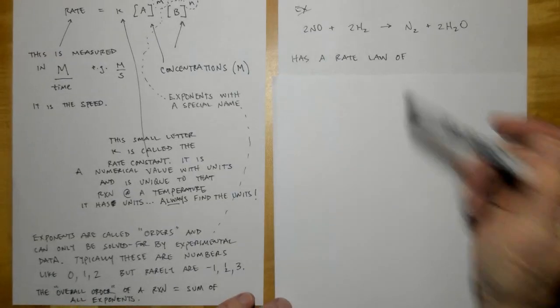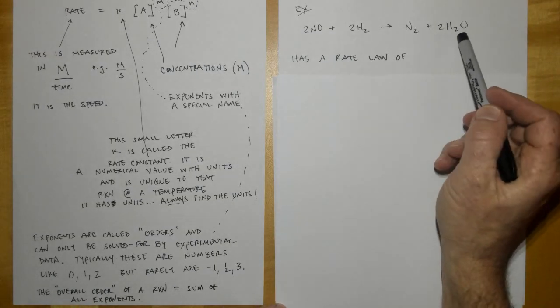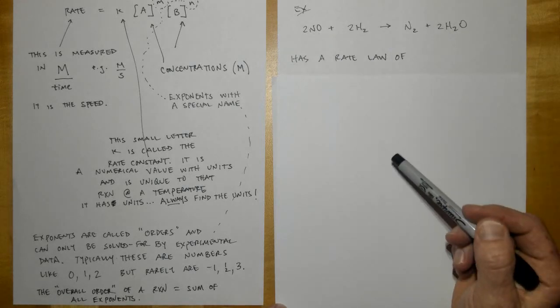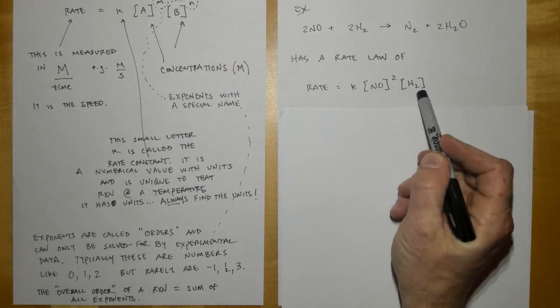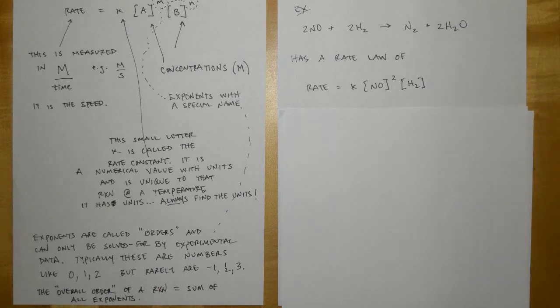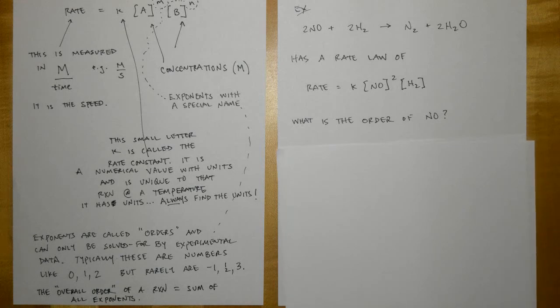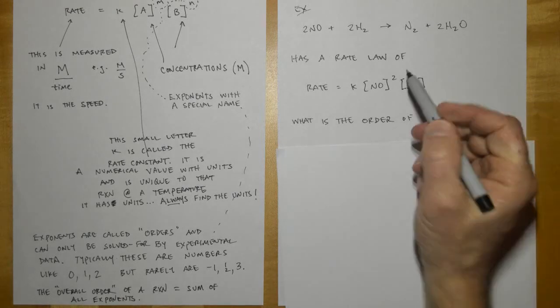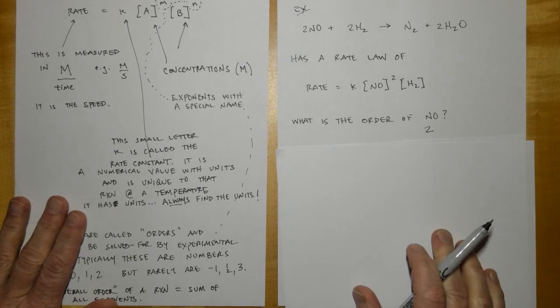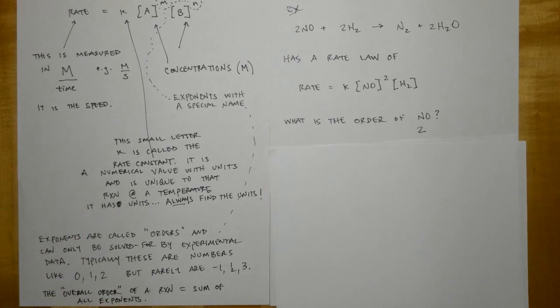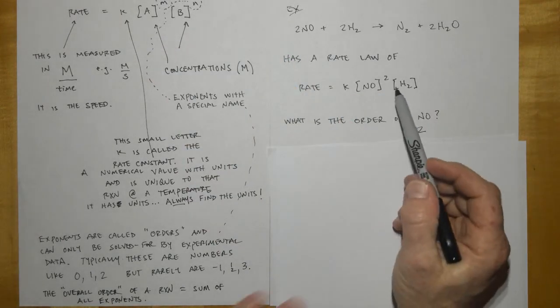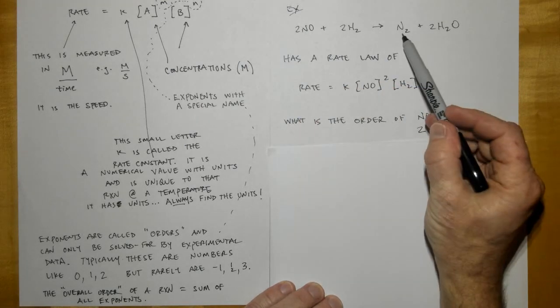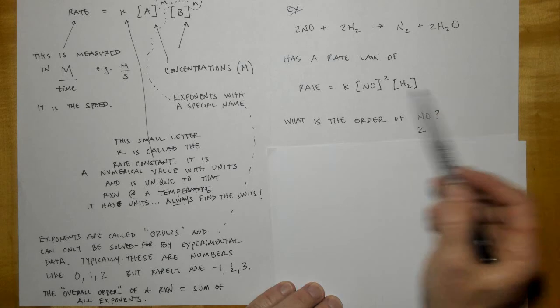Here's an example problem of NO plus H2 goes to N2 plus H2O. Notice there's a 2 here, 2 here, and a 2 here to balance it. It has an experimentally determined rate law of rate equals K NO2 to the second power, H2 to the first power. Remember, if nothing is written there, it's assumed that there's a 1. What is the order of NO? So what is the exponent for NO? Well, you would say 2, because there's a little 2 right up here. So when they ask you the order of NO, it's always the exponent above that substance. Notice that the rate expression or the rate law only involves the reactants too. These guys right here, the products over here, they're never in the rate law or never in the rate equation.